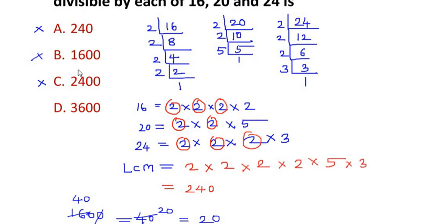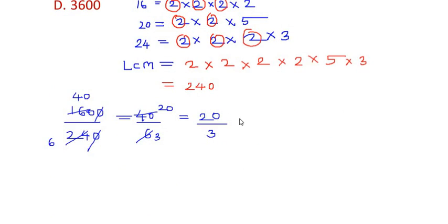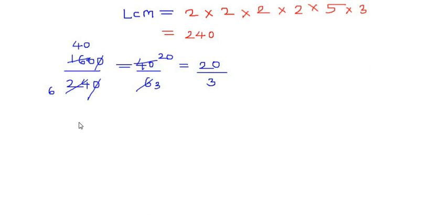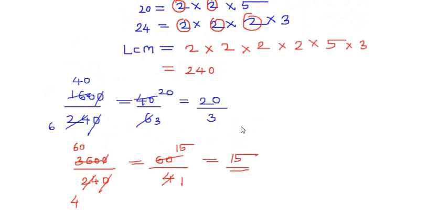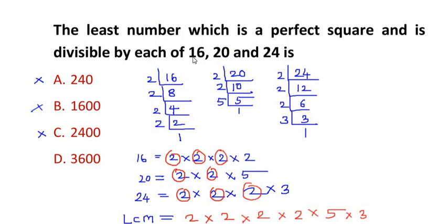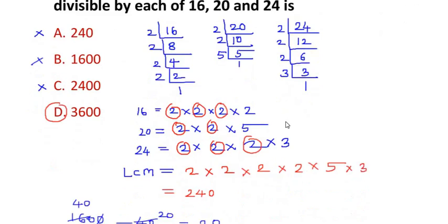Now let us try 3600 divided by 240. Cancelling a zero from each gives 360 over 24. Both go into the table of 6: 6 times 60 is 360 and 6 times 4 is 24, giving us 60 over 4, which simplifies to 15. We get an integer, so 3600 is perfectly divisible. Therefore, the least number which is a perfect square and divisible by 16, 20, and 24 is 3600. I hope you understood and liked the video — thank you for watching.